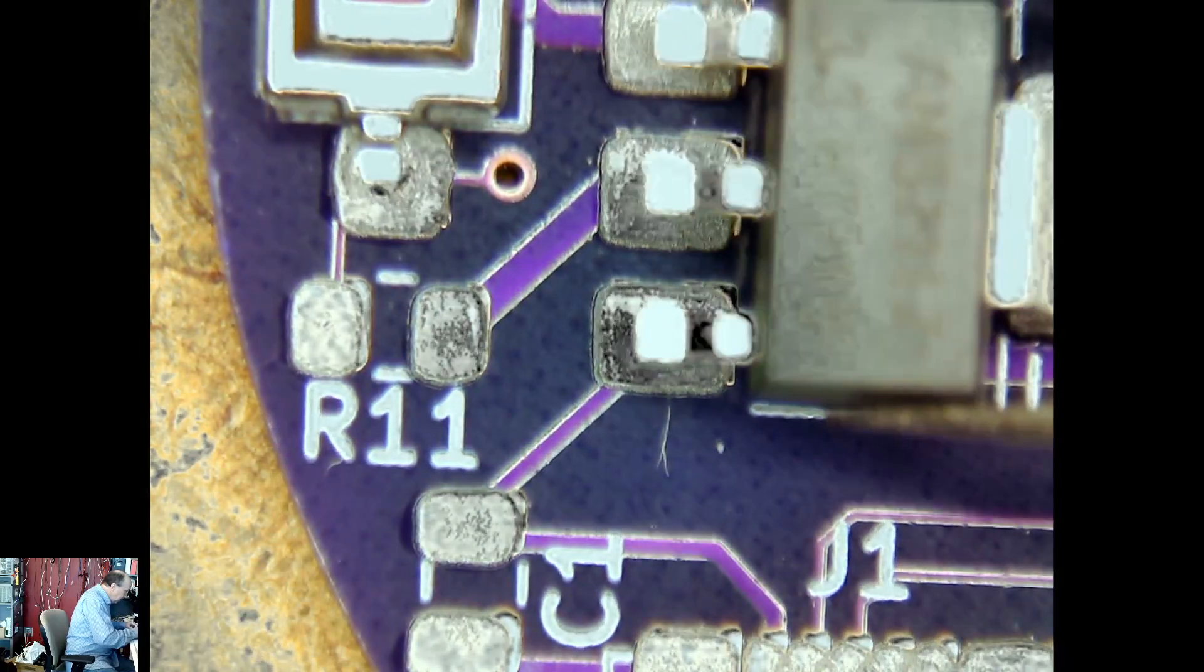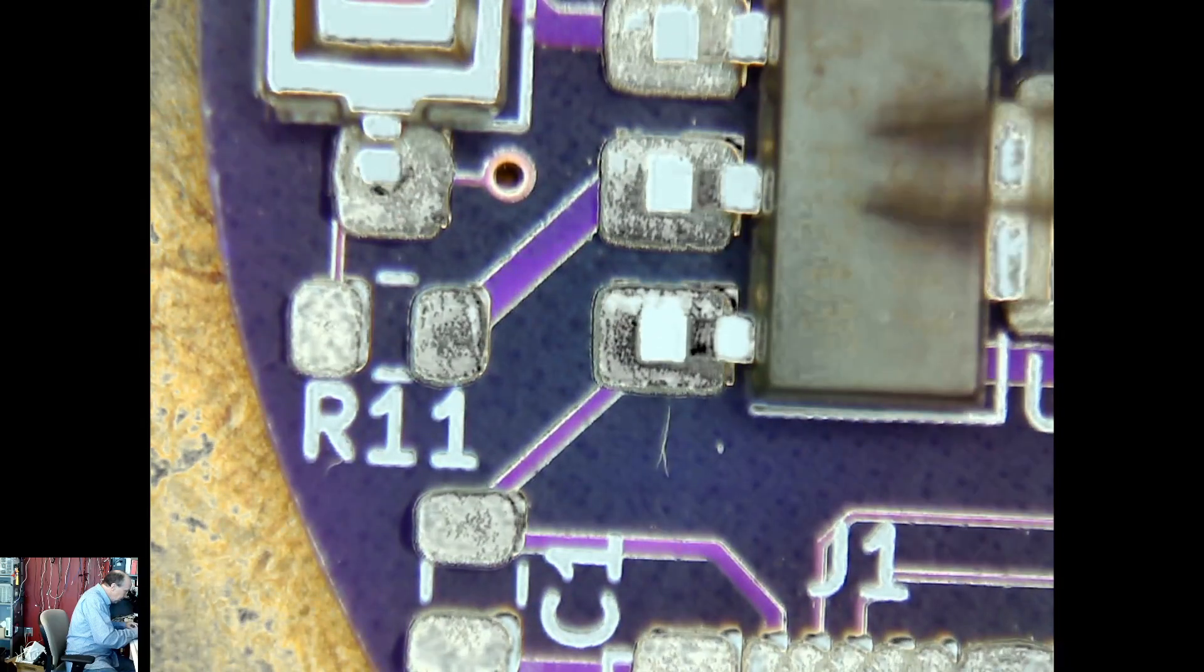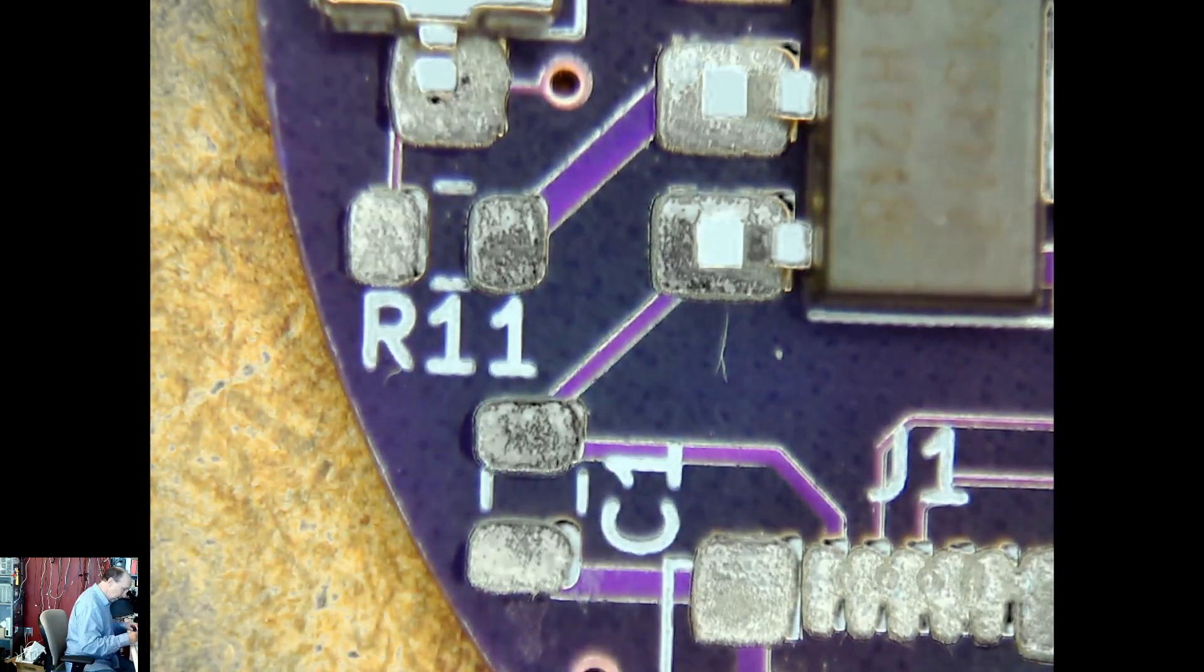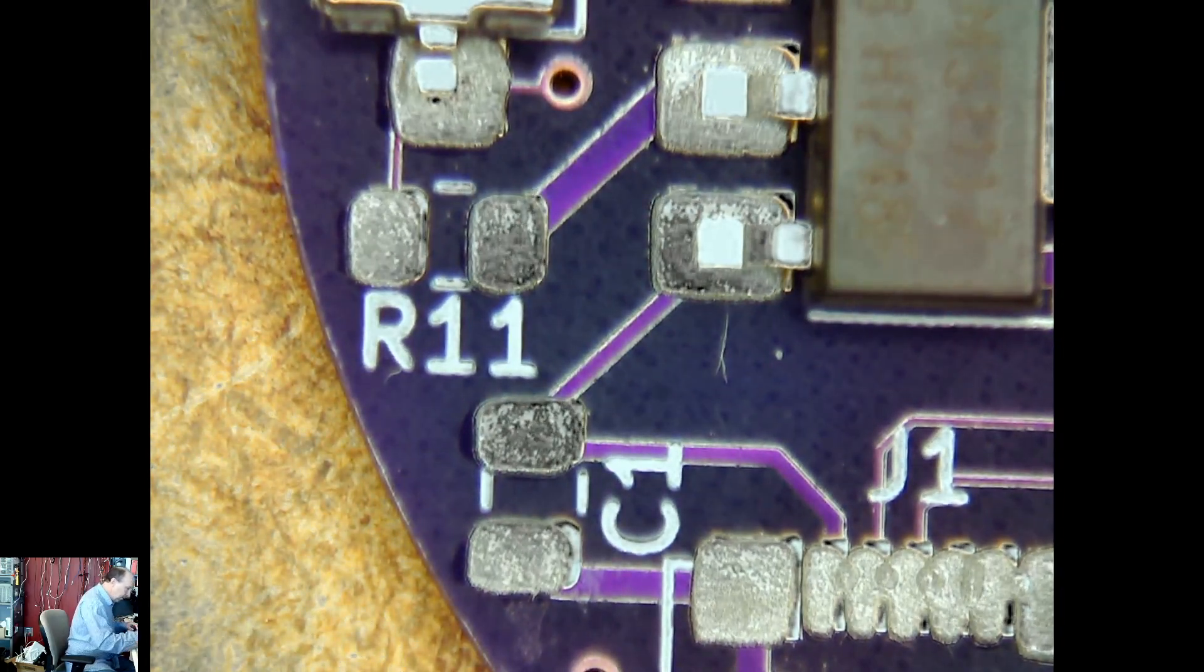I've got a big regulator that's easy to spot. There's only one of those. R11 is a 4.7.